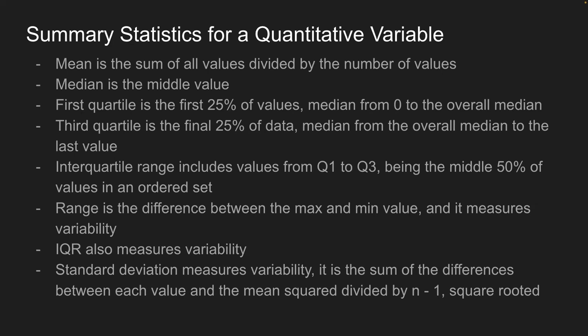Now I'm going to summarize statistics for a quantitative variable. The mean is the sum of all values divided by the number of values. The median is the middle value. The first quartile is the median of the lower half — the first 25% of values. The third quartile is the median of the upper half — the last 25%. The IQR, or interquartile range, includes values from Q1 to Q3, representing the middle 50% of values. Range is the difference between the max and minimum values and measures variability.